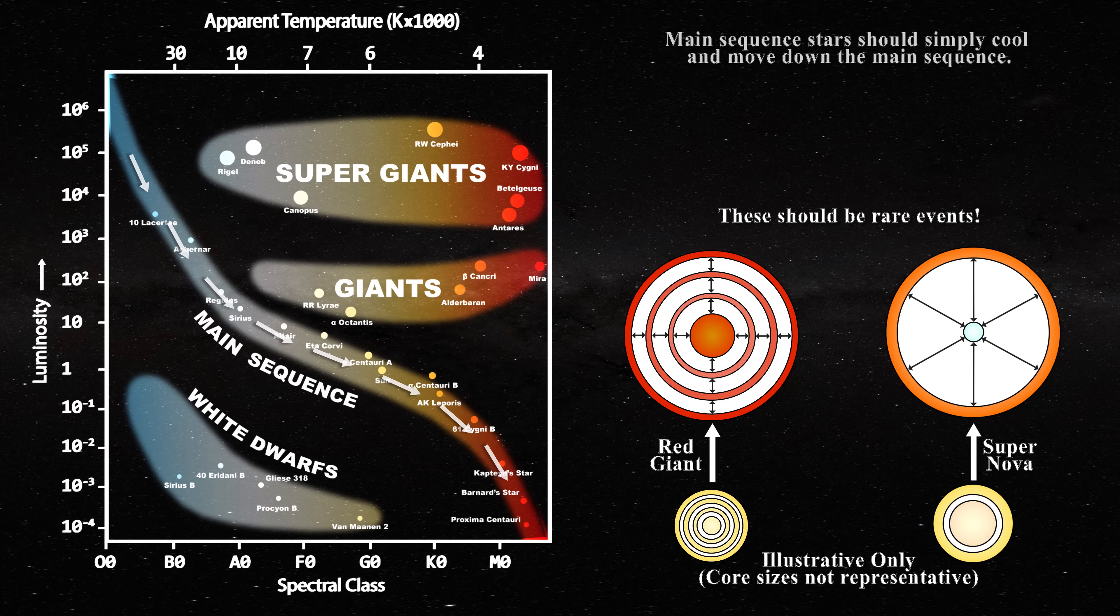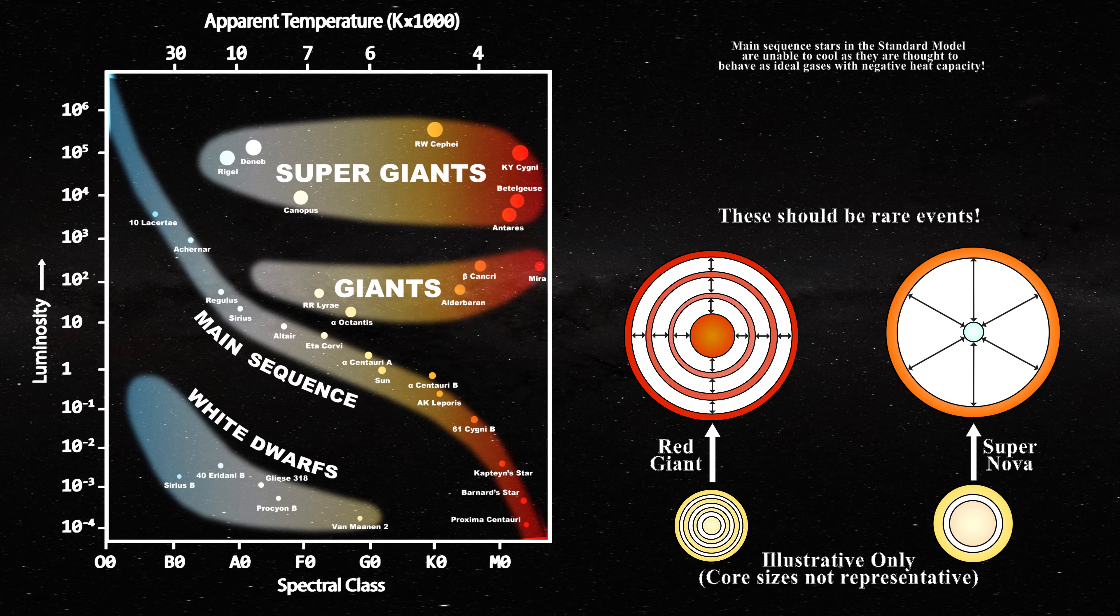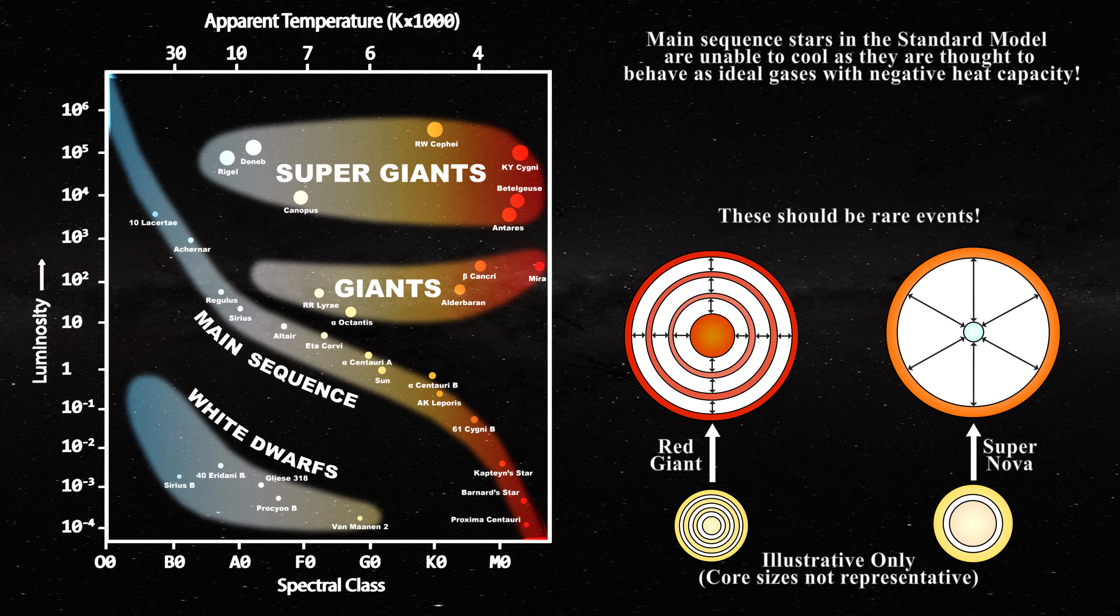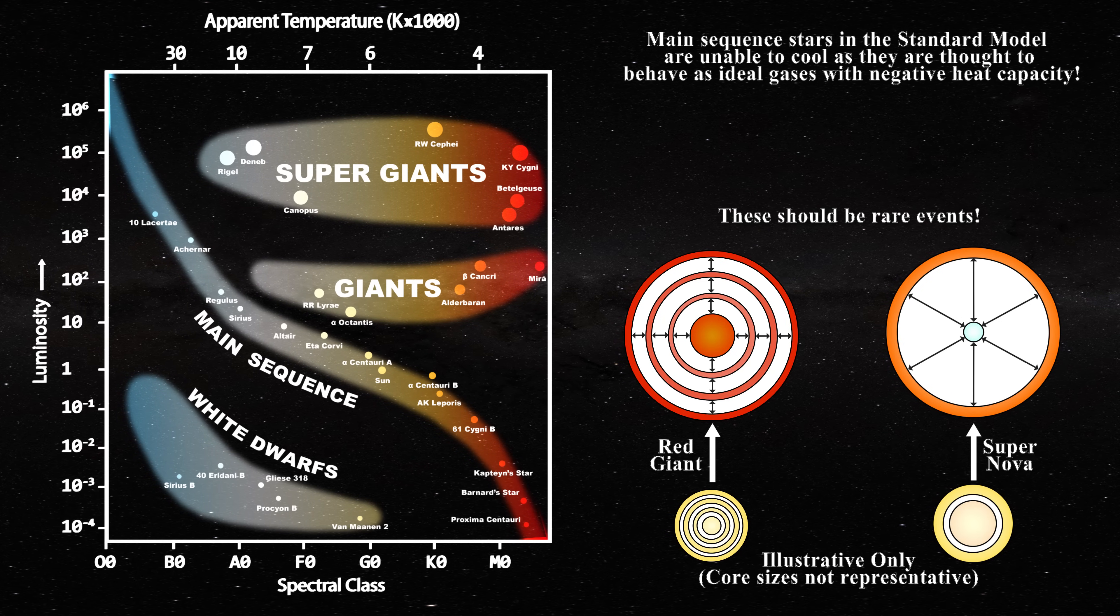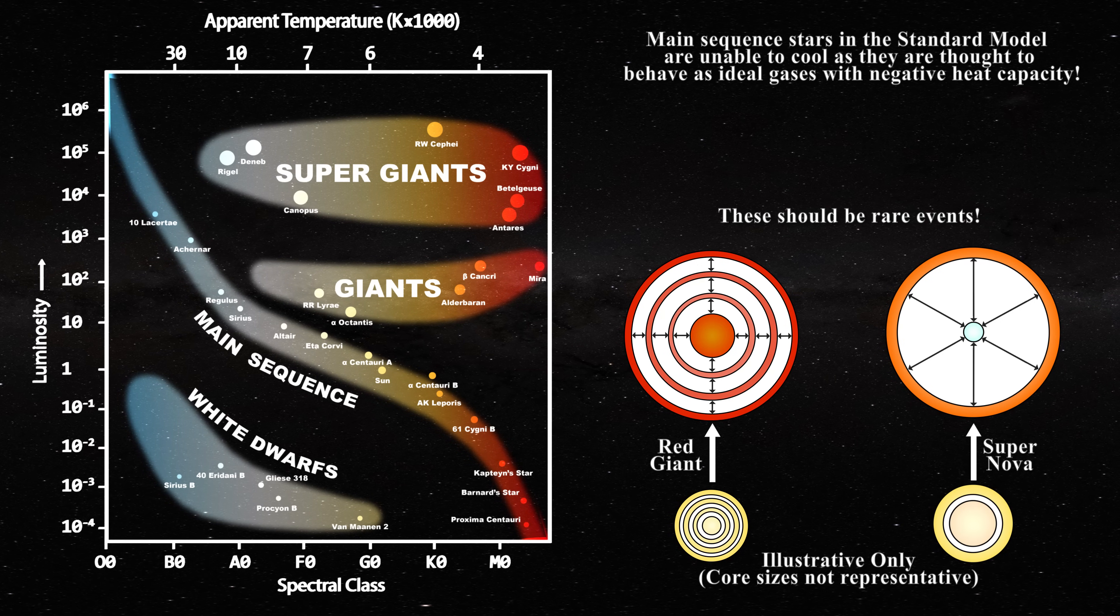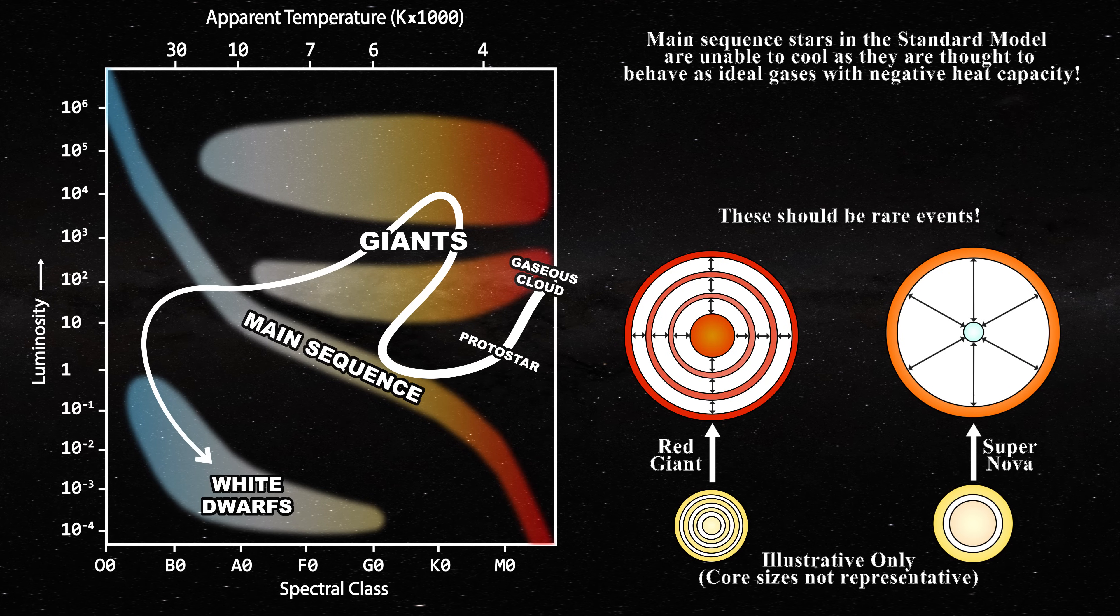Now consider what is happening in the standard model. In this model, stars on the main sequence are unable to cool. They have negative heat capacity, and therefore as they lose energy their temperature actually goes up according to Eddington and modern astrophysics. As a result, in order for an ordinary star to cool in the standard model, it must leave the main sequence and become a white dwarf.